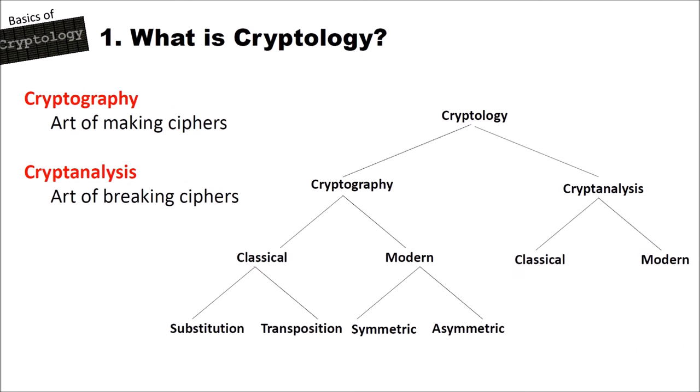So what is cryptology? Cryptology consists of two parts. The first part is cryptography, which is the art of making ciphers. And then we have cryptanalysis, which is the art of breaking ciphers. On the right side you see a tree where I try to further divide parts of cryptology. On the left side you see cryptography, on the right side you see cryptanalysis.